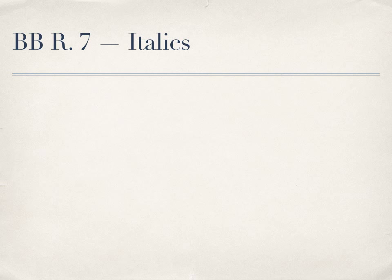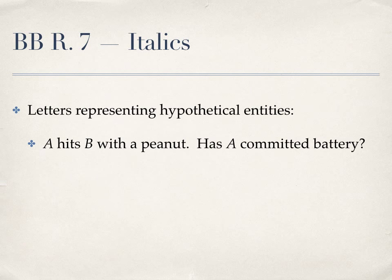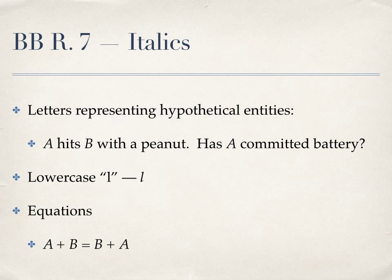We have three additional uses for italics under Rule 7. You should italicize letters representing hypothetical entities, as in the example of A and B. You should also italicize lowercase l when used on its own, so that the reader doesn't confuse the L for a number 1. Finally, make sure you italicize equations. You've now finished Blue Book Episode 6 and are ready to start on your homework. If you have any questions, please see me or a TA. See you again in the next video.